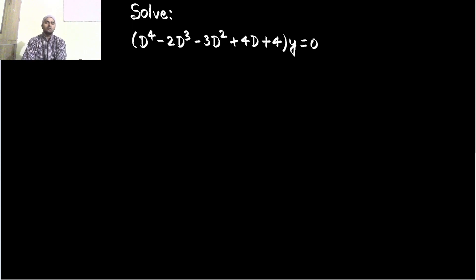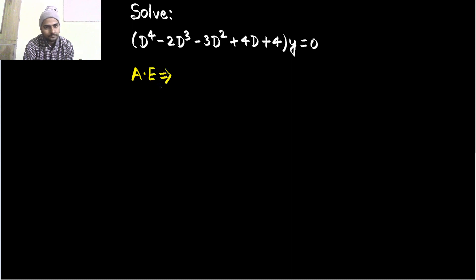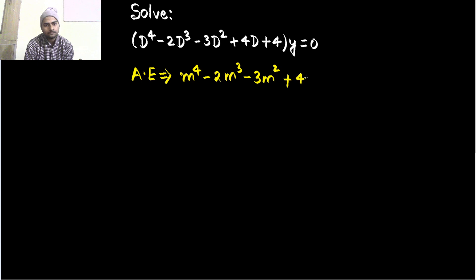For that we need the roots of the auxiliary equation. So let us first write the auxiliary equation. The auxiliary equation in this case — just replace this D by m — so you will get m power 4 and equate it to 0.